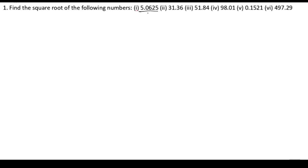First bit: 5.0625. We are going to solve this. We need to find out the square root. As you can see, we are having a decimal in this number. Let us write down the given number 5.0625.